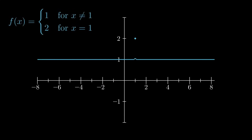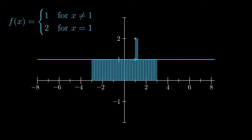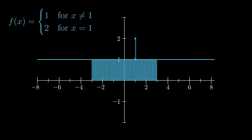This approach also works if we have a function with a single discontinuity. The lower approximation is always the same. When we look at the upper approximation, it first looks like the area would be different, but as you make the rectangles thinner, both approximations approach the same value, so the function can be integrated with Riemann integration.